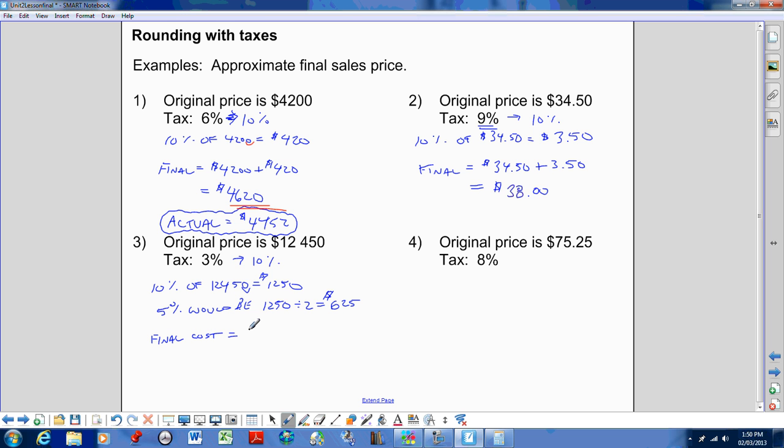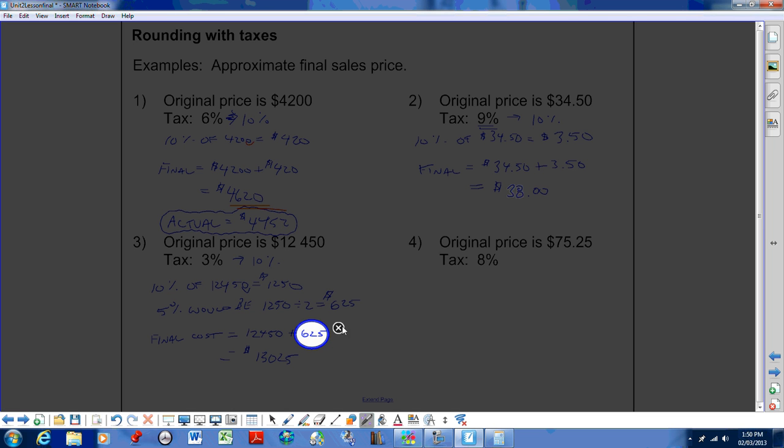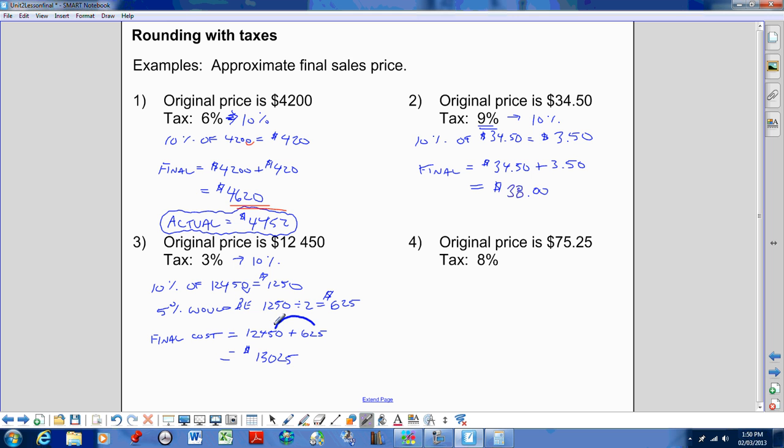So all I did was I cut it down. Now I know I'm still going to be high, because I'm adding 5%. So I would have the $12,450 plus $625, which would leave a final cost of approximately, so if we added $600 to $400, so it's going to be about $13,025. So I'm not even, I'm just giving an approximation. I'm not doing the exact math. I'm just knowing that if I add $600 here, so this is about $600. If I add $600 to $12,400, it's going to go to approximately $13,000. I'm not looking for exact value here. I'm looking for a good guess.